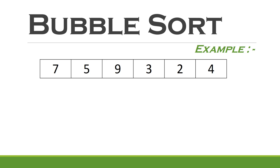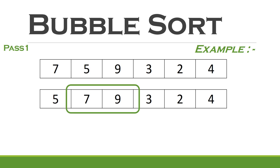In the first pass, it will compare 7 with 5. Since 7 is bigger than 5, it will swap both numbers. In the next comparison, 9 is already bigger, so no swap is needed. It simply moves on to the next comparison.